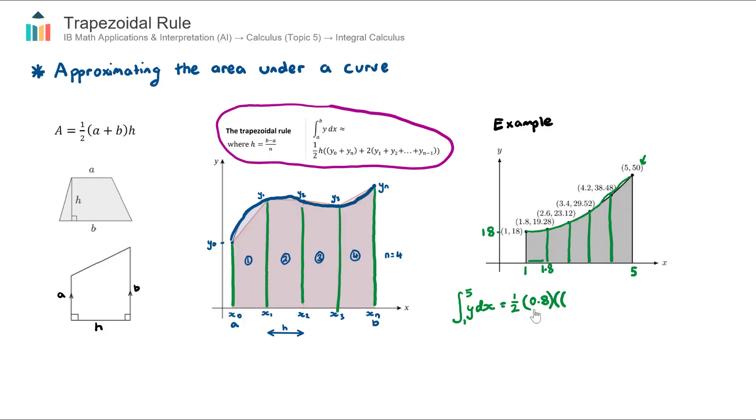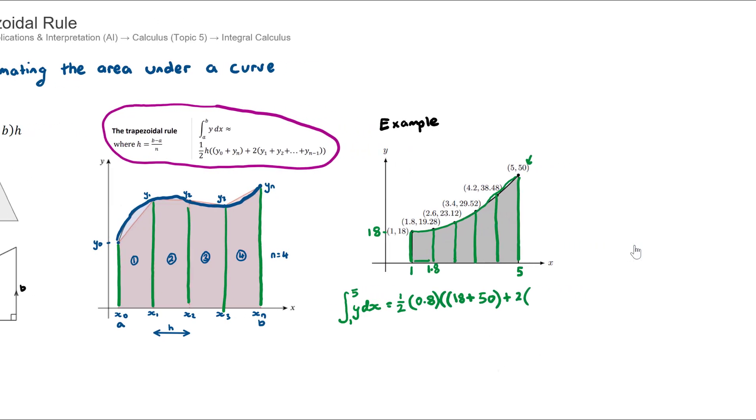Now we open up our brackets. We have y0 plus yn, so the height of the left-hand side of the left-hand trapezoid, that's this height here and that is 18, plus yn which is the height of the right-hand side of the right-hand trapezoid, that is 50. Close that bracket plus two times all of the internal heights. So that will be, and I'll just create some room here, that will be 19.28 plus 23.12 plus 29.52 plus 38.48. They're all the heights of these vertical lines. I'll just pause the video and write those in.